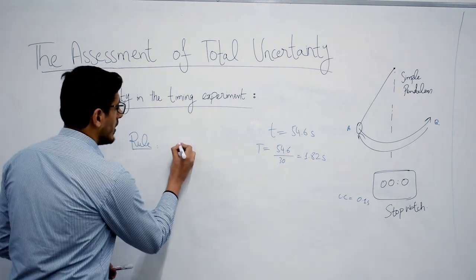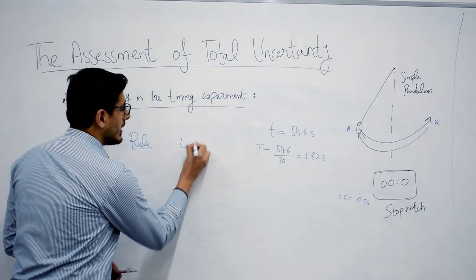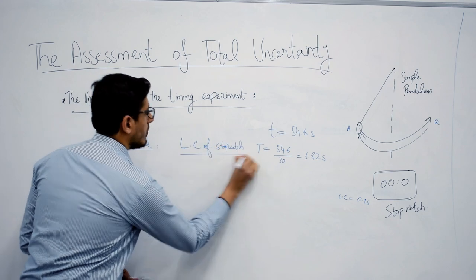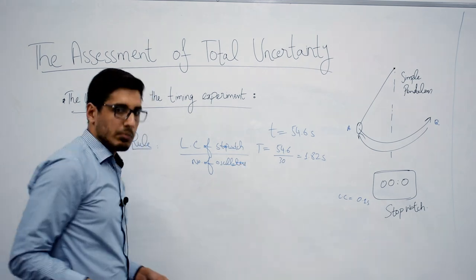The rule says that you divide the least count of the stopwatch by the number of oscillations. Simple.